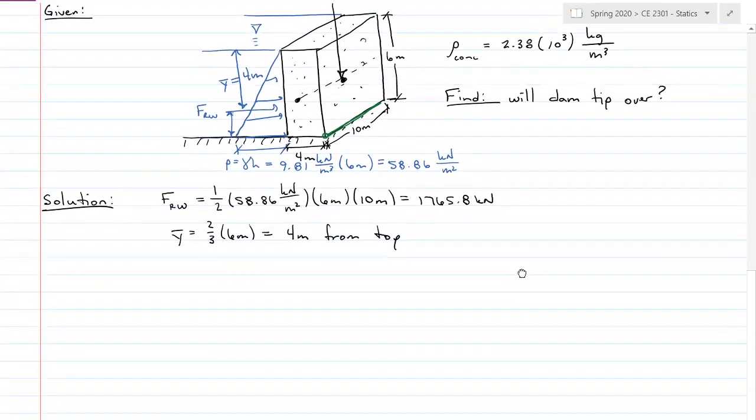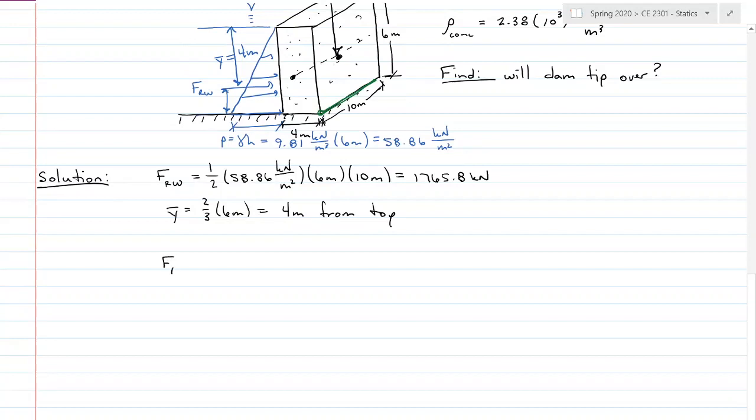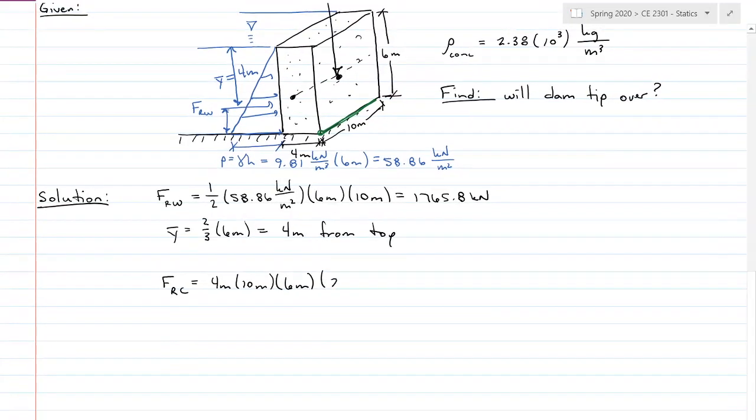The force resultant of my concrete. Force resultant concrete is going to be the volume of the concrete, 4 meters by 10 meters by 6 meters. And then we're going to multiply it by the density of the concrete, 2.38 times 10 to the third kilograms per meter cubed. And that's mass, so I need to multiply it by gravity, 9.81 meters per second squared.